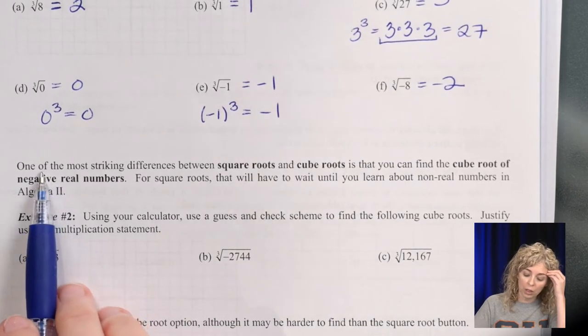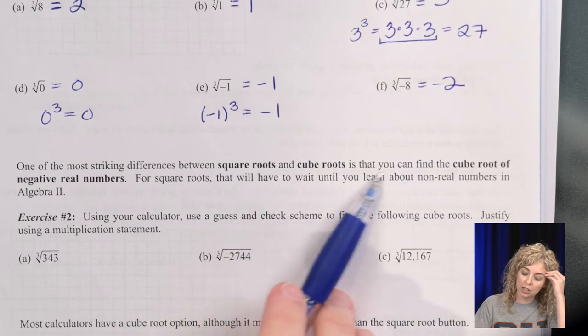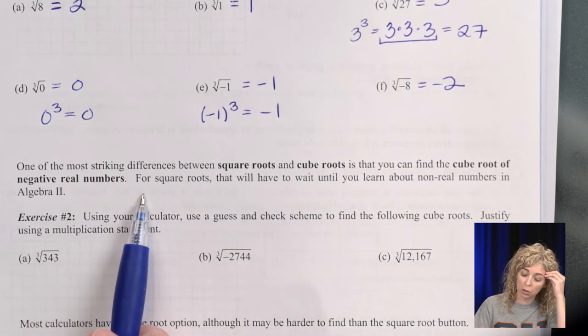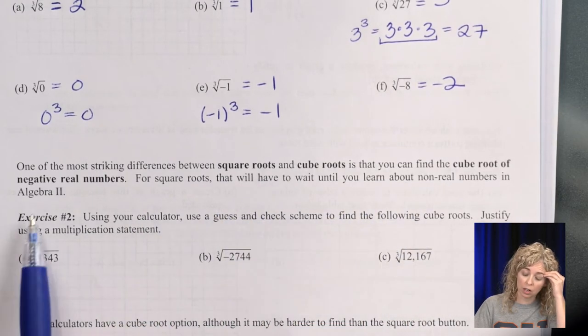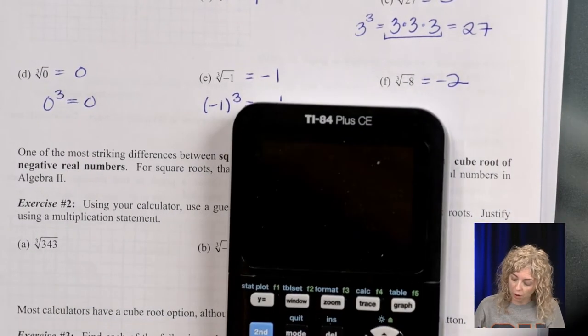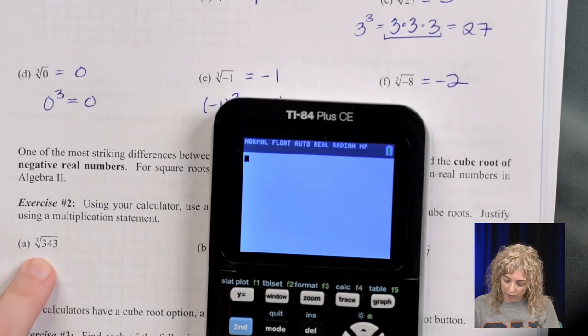One of the most striking differences between square roots and cube roots is that you can find the cube root of negative real numbers. For square roots, that will have to wait until we have non-real answers in Algebra 2. So use your calculator. I just want you to watch me. If you have one, feel free to take it out.